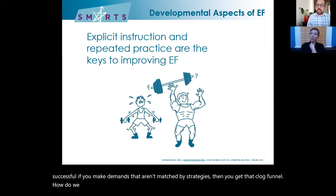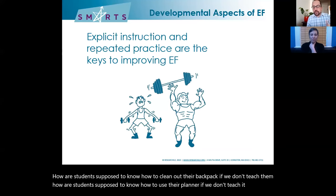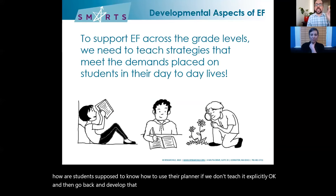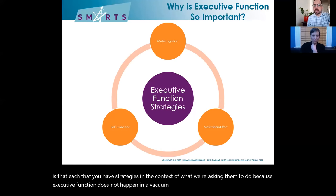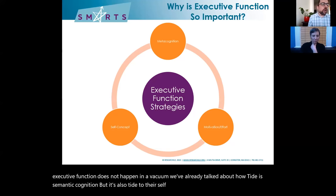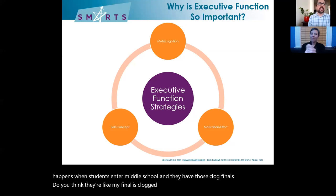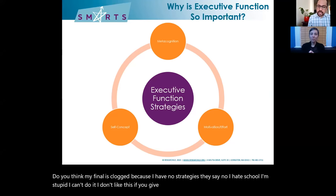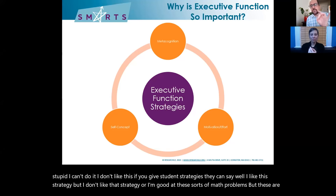The key to supporting kids' EF needs is to teach EF strategies in the context of what we're asking them to do, because executive function does not happen in a vacuum. It's tied to metacognition, self-concept, motivation, and effort. When students enter middle school and have those clogged funnels, they don't say 'my funnel is clogged because I have no strategies' — they say 'I hate school, I'm stupid, I can't do it.' If you give a student strategies, they can say 'I like this strategy but not that one' or 'I'm good at these math problems but these are hard.' That's what we want when we teach EF strategies.